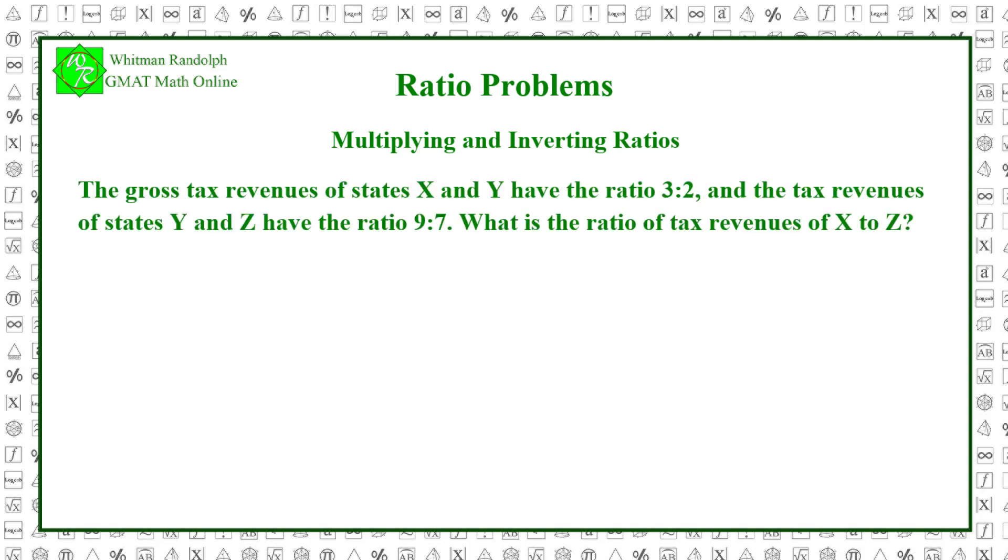The gross tax revenues of states X and Y have the ratio 3 to 2. And the tax revenues of states Y and Z have the ratio 9 to 7. What is the ratio of tax revenues of X to Z? Let's find the solution.